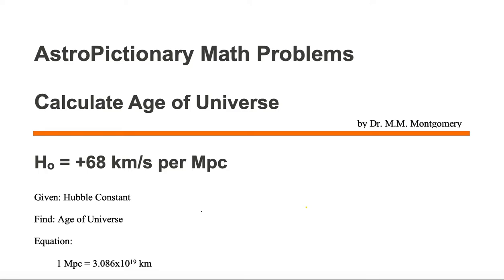We would like to calculate the age of the universe. We're given the Hubble's constant of positive 68 kilometers per second per megaparsec.